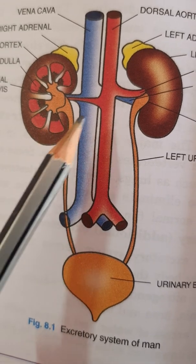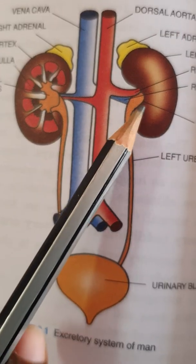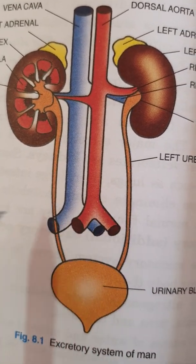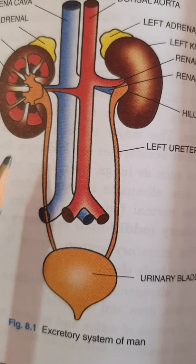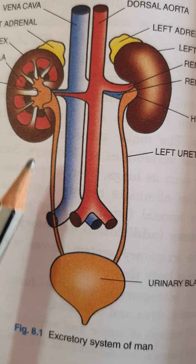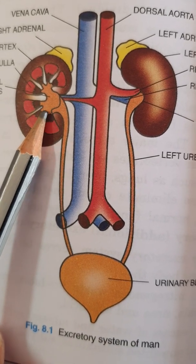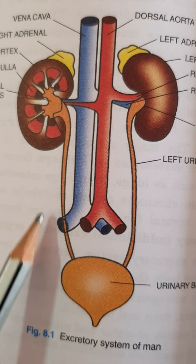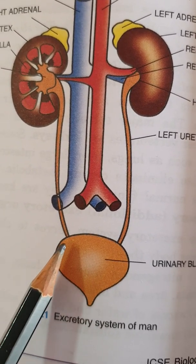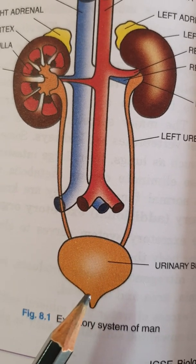From each kidney, a tube-like structure arises and this is known as the ureter. The ureter arises from the funnel-shaped structure of the kidney known as the pelvis, and it carries urine down toward the bladder.